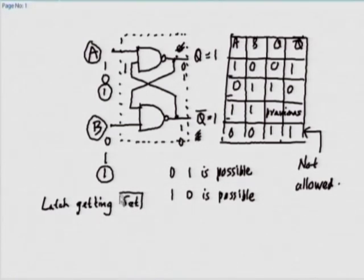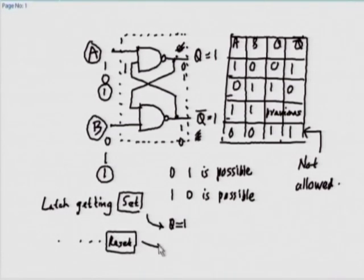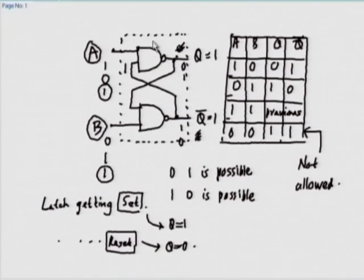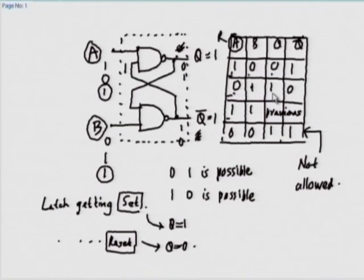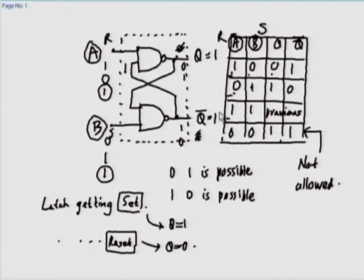Now we need to figure out what to call A and what to call B. We need to introduce the concept of a latch getting set and getting reset. Latch getting set means Q is becoming 1. Latch getting reset means Q is becoming 0. Knowing this, if A is active and B is not active, the latch is getting reset - so A must be the R input. Similarly, if B is active and A is not, the latch gets set, so B must be the S input.